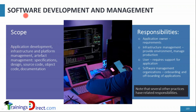The scope of software development includes application development, managing the infrastructure and platform so the software can run, setting up environments, running customization commands, managing artifacts, software specifications, software design, programming source code, and creating machine code or compiled executables. For example, something written in Python is just source code, but once compiled it creates an executable. Documentation — release documents, design documents, specification documents — is also part of the scope.